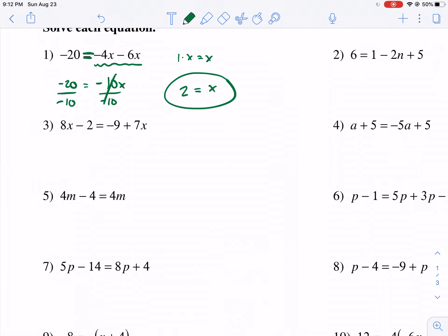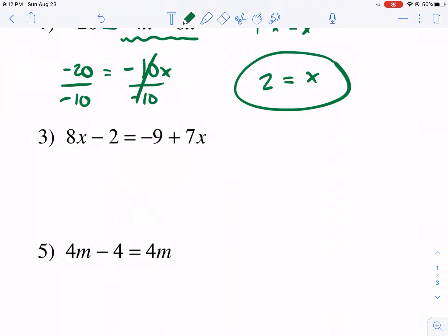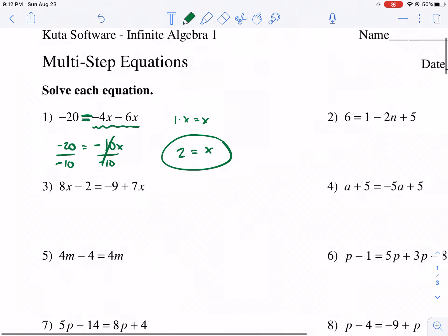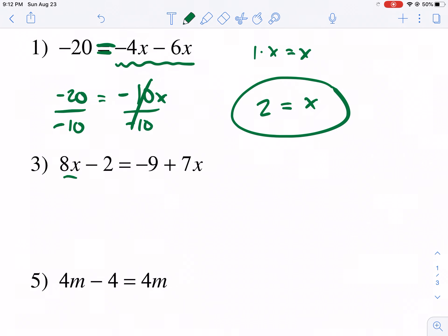Let's move on to, I guess we'll do number 3. That one looks like it's a pretty good one. So we have 8x minus 2 equals negative 9 plus 7x. Now, here we have a case where we have an x on the left side and an x on the right side.